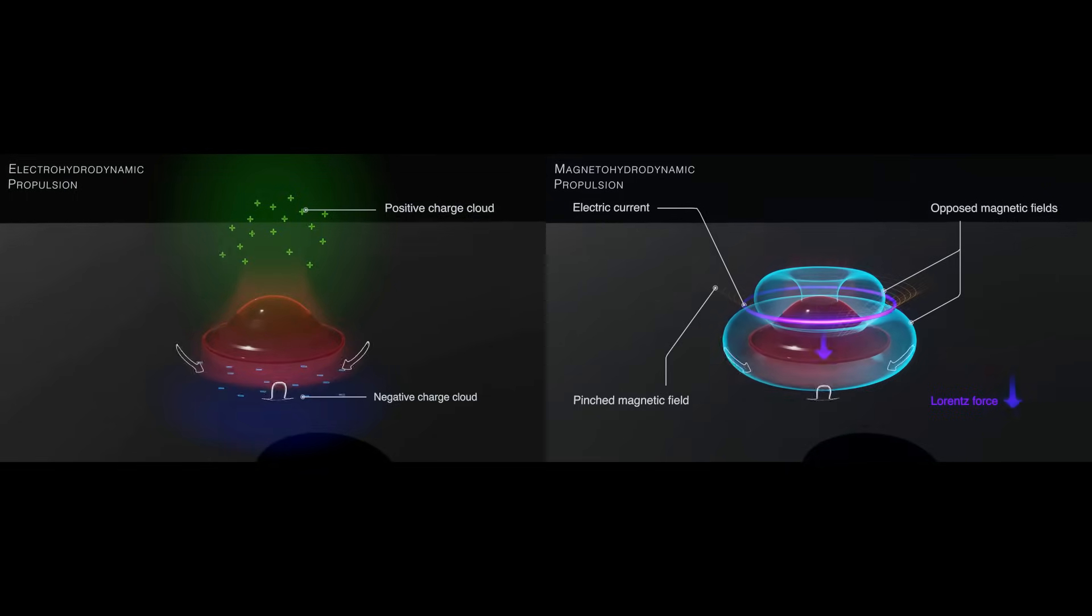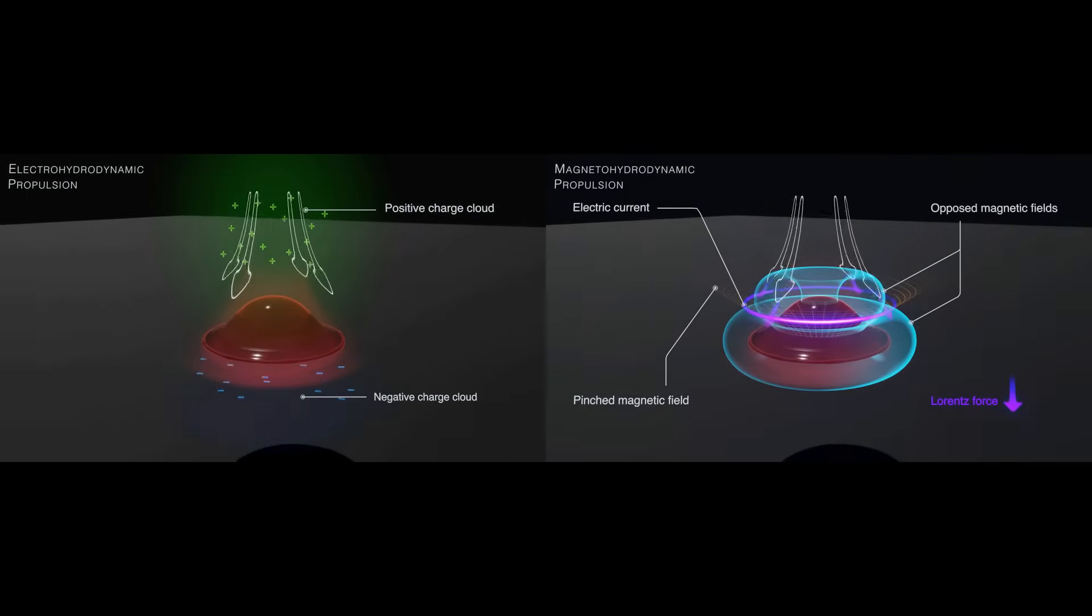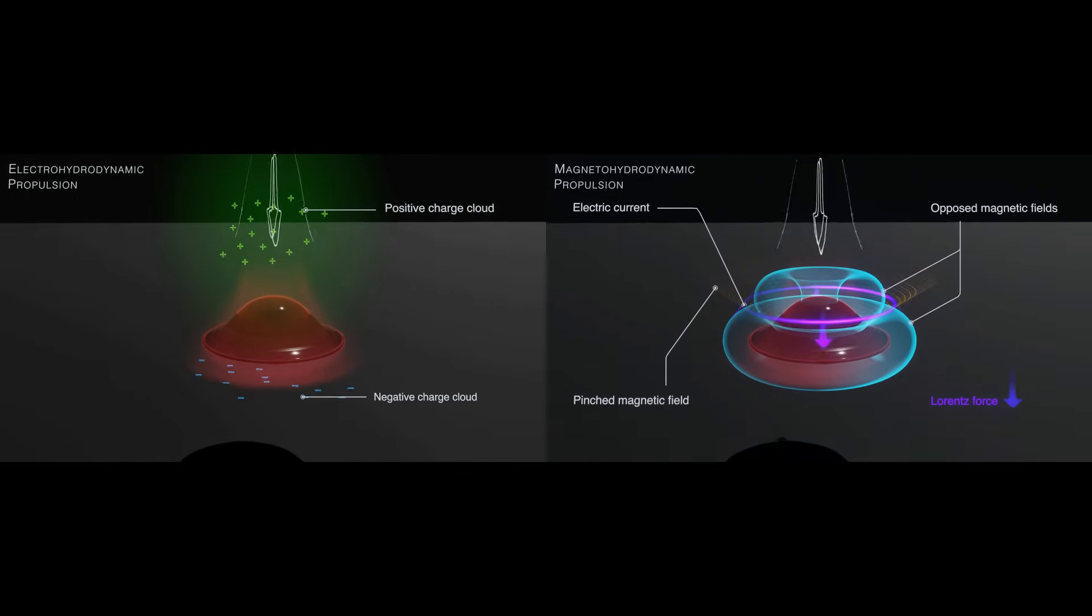Also, different versions or iterations of a vehicle might use only ionized wind propulsion, only MHD propulsion, or both.